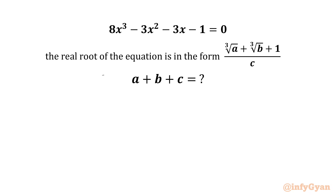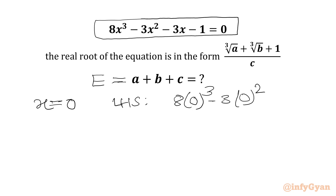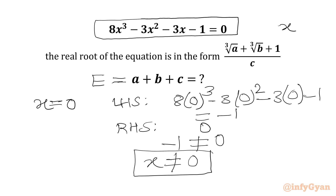Let's get started by considering the required expression a + b + c equal to some value first. Now we will check our equation at x = 0. Putting x = 0 in the LHS: 8(0)³ - 3(0)² - 3(0) - 1 gives LHS = -1, and RHS = 0. Since -1 ≠ 0, x = 0 cannot be a solution of this equation.